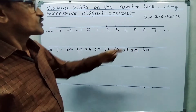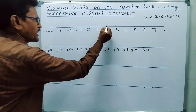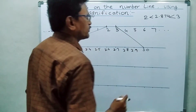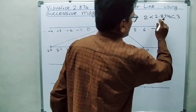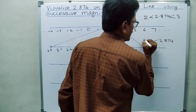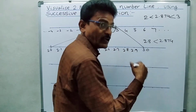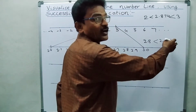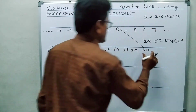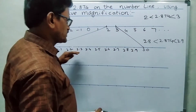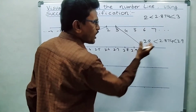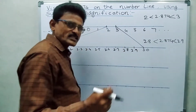Now, our number 2.874 lies between 2 and 3. Once again think: 2.874 is greater than 2.8, because after 2.8 some number is still there, but less than 2.9. So here our number lies between 2.8 and 2.9.